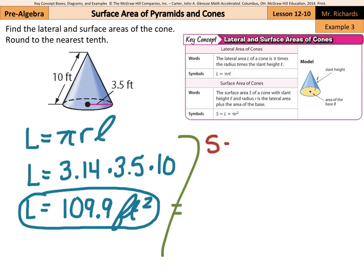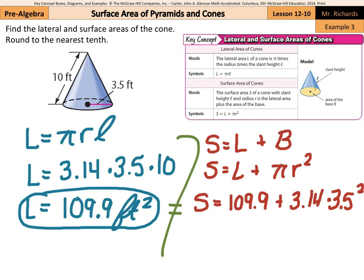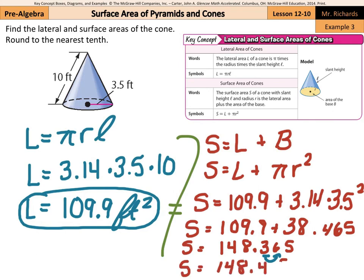For surface area: surface area equals the lateral area plus the area of the base, which is πr squared. So surface area equals 109.9 plus 3.14 times 3.5 squared. Surface area equals 109.9 plus 38.465. Adding these together gives 148.365, and when rounded to the nearest tenth — looking at the hundredths place — surface area equals 148.4 feet squared.